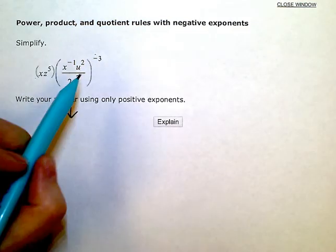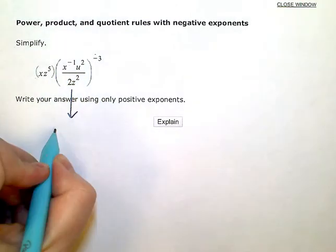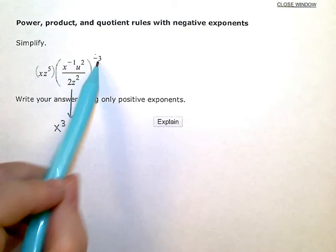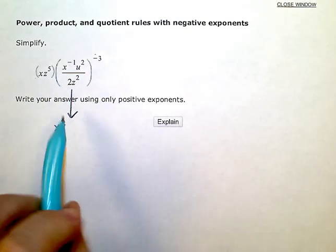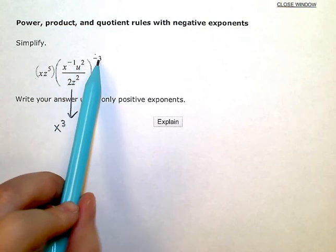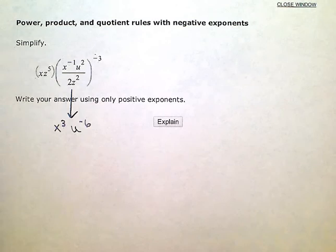So I'm going to do negative 3 times x to the negative 1. That's going to give me x to the positive 3. Multiplying the exponents there, negative 1 times negative 3 is positive 3. Now I'm going to do the u. Positive 2 times negative 3 will give me negative 6 as an exponent for the u.